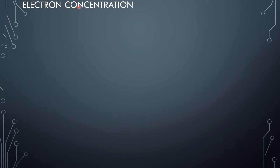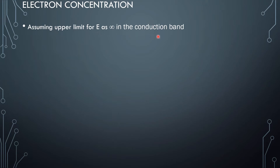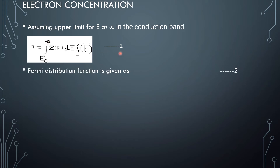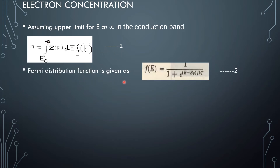Electron concentration. Assuming that the upper limit for energy is infinity in the conduction band, the concentration of electrons is equal to the integration of Z(E) dE into F(E), with limits from Ec to infinity — Equation 1. The Fermi distribution function is given as F(E) = 1 / (1 + e^((E - EF) / KT)) — Equation 2.